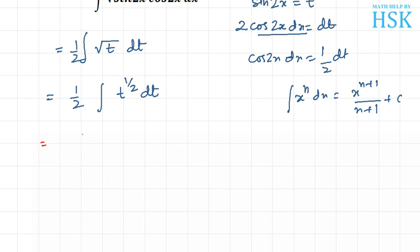I get this as 1/2 × t^(3/2) / (3/2) + C. This will equal 1/2, and with 3/2 in the denominator, this can be written as 2/3 × t^(3/2) + C.